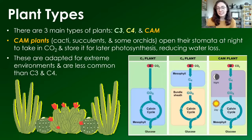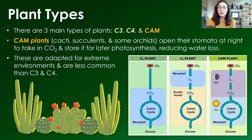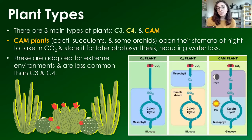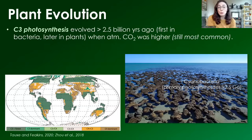CAM plants are things like cacti, succulents, and some orchids. These plants open their stomata at night to take in CO2 and store it for later photosynthesis during the day, which helps to reduce water loss. These plants are adapted for extreme environments, like very arid desert environments, and are less common globally than C3 and C4 plants.